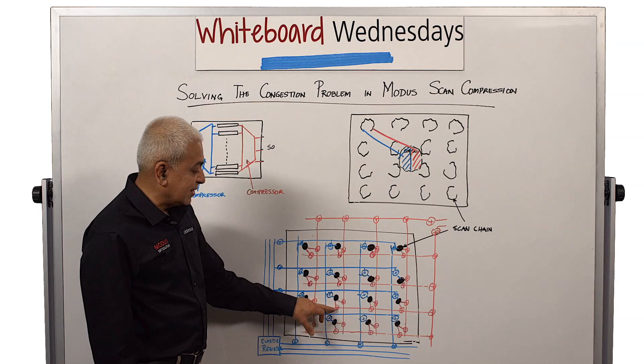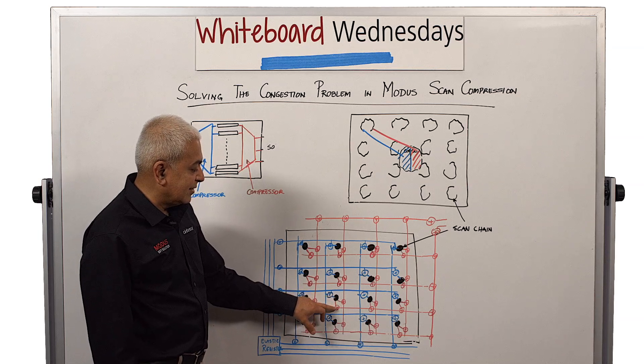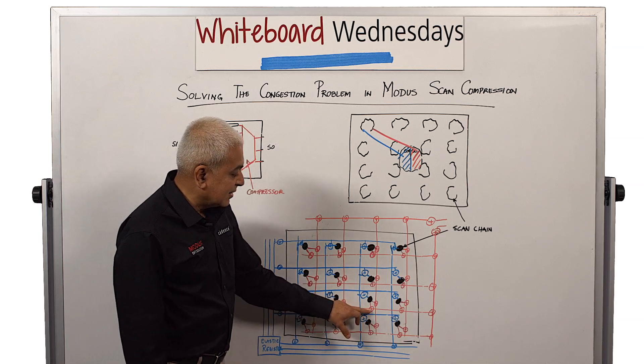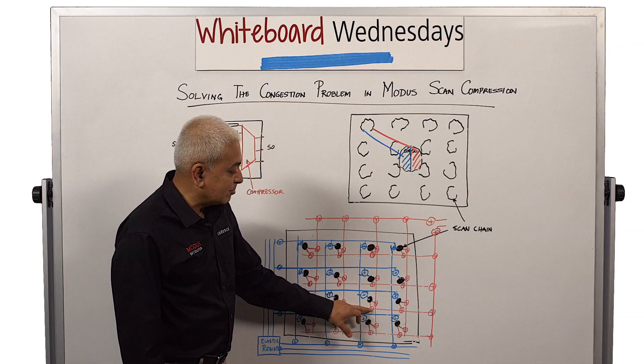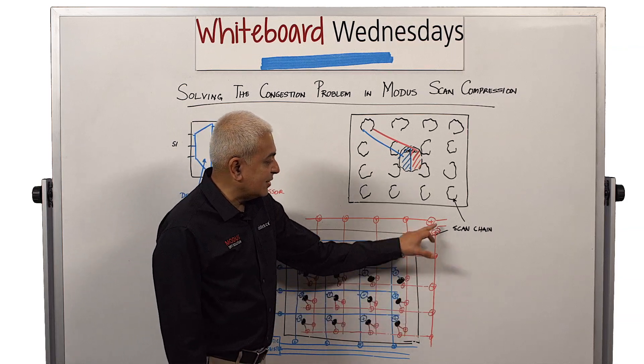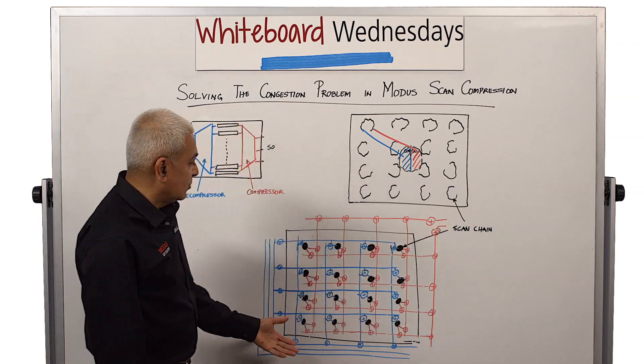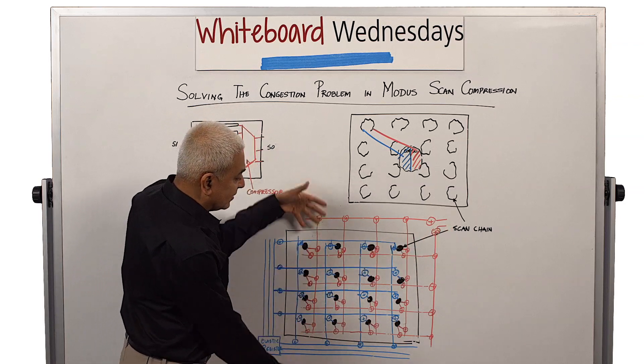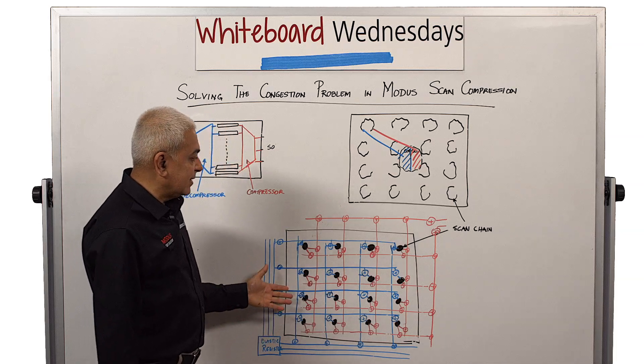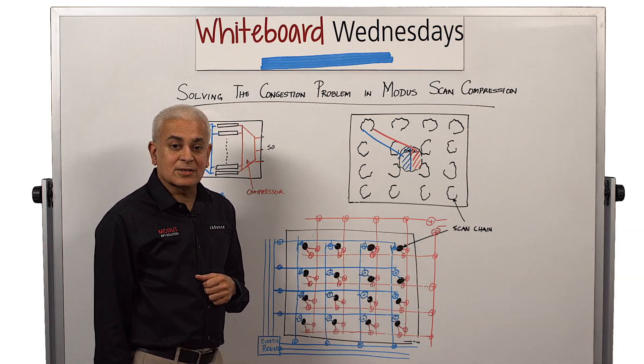It goes and XORs with this particular scan chain output, collects with this particular scan chain output, and at the end is collected all the way to the scan outs. So the two grid lines, an XY grid is created to get the compressor implemented in MODIS.